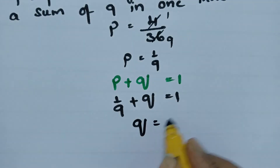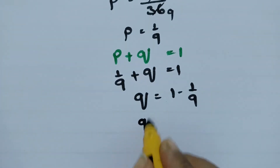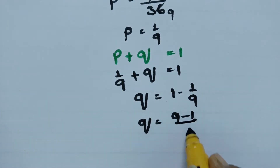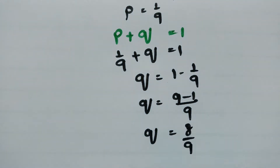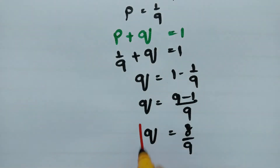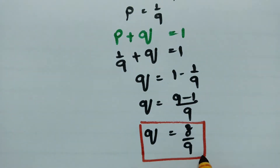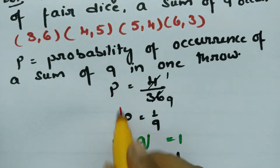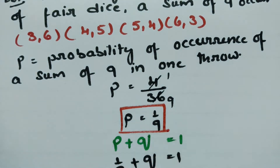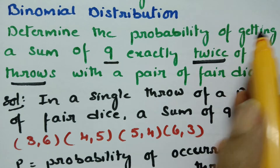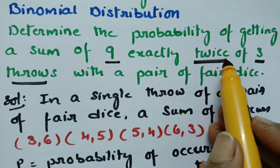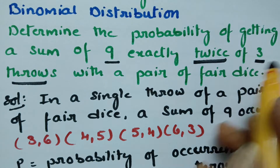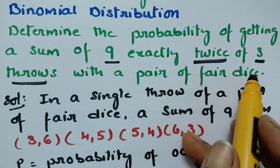So what will be the Q value? Q is equal to 1 minus 1/9, which is (9-1)/9, so Q is equal to 8/9. We have the Q value as 8/9 and P value as 1/9. Now we need to determine the probability of getting a sum of 9 exactly twice in 3 throws with a pair of fair dice.